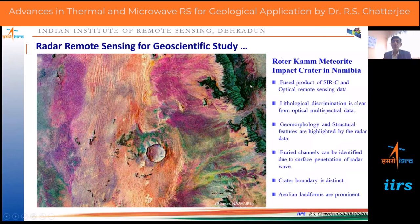Optical false color composites give rock color information, while radar images give topographic elevation, slope, and ground penetration information. That is why geomorphic features like structural hills and buried channels become so prominent. Similarly, crater boundaries and Aeolian landforms like longitudinal sand dunes are highlighted in merged optical-radar imagery.